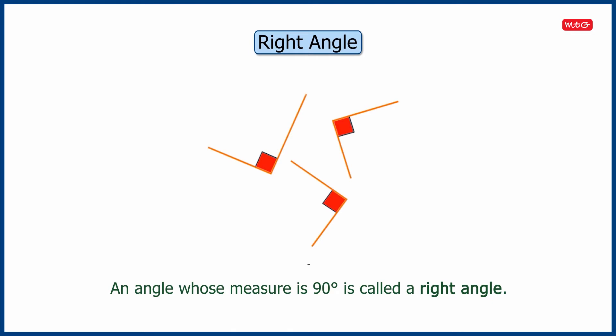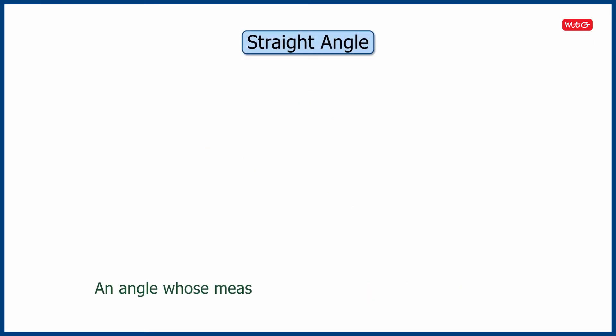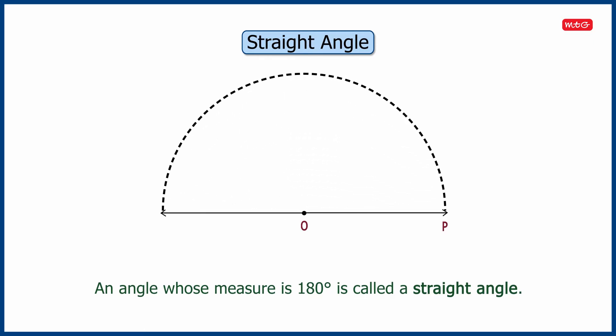A right angle can be in any orientation or rotation as long as the angle between the two rays is 90 degrees. Now comes the straight angle. An angle whose measure is 180 degrees is called a straight angle. Here in the figure, two rays OP and OQ are on the same straight line but in opposite directions, so the angle between them is 180 degrees and it is called a straight angle.